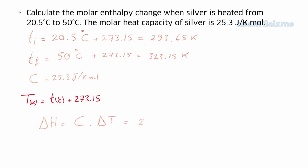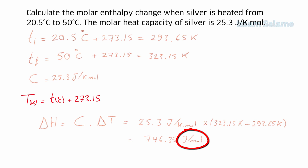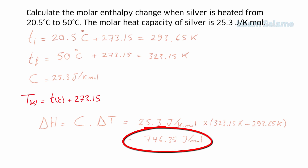c is the molar heat capacity and ΔT is the change in temperature — the final temperature (323.15 K) minus the initial temperature (293.65 K). After doing the calculation, the molar enthalpy change equals 746.35 joules per mole. Notice that the unit for molar enthalpy change is joules per mole.